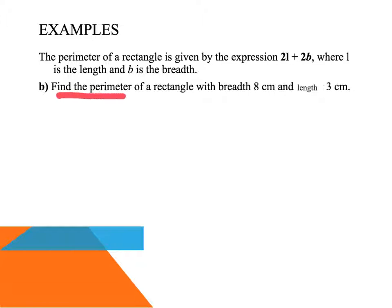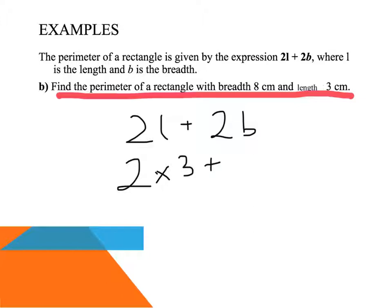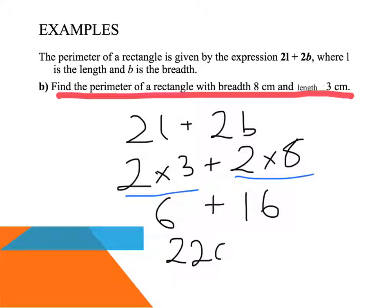Okay, the top part of the question is the same. This is now asking me to find the perimeter of a rectangle with the breadth of 8 centimeters and a length of 3 centimeters. Okay, so now it's giving me centimeters. So let's substitute it again: 2L plus 2B, substituting 2 times a length of 3 and a breadth of 8. I'm doing my multiplication first: 2 times 3 is 6, 2 times 8 is 16. 16 plus 6 becomes 22 centimeters.